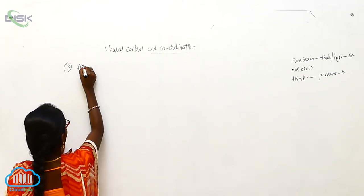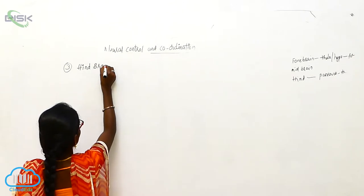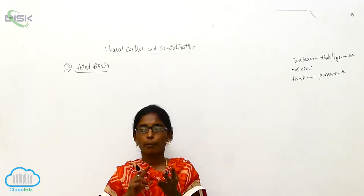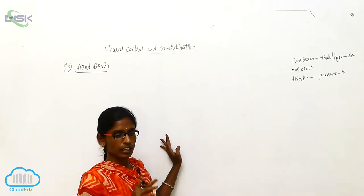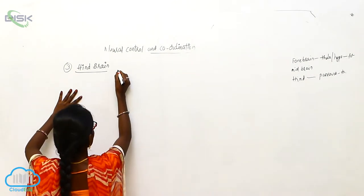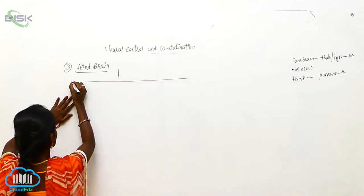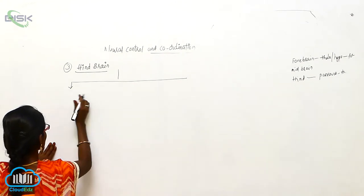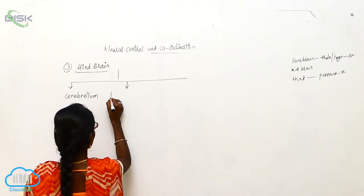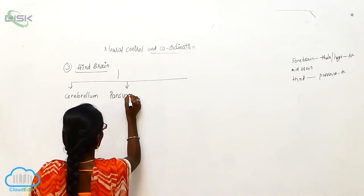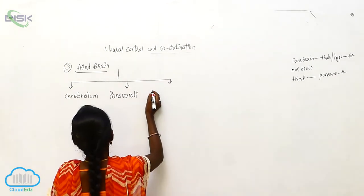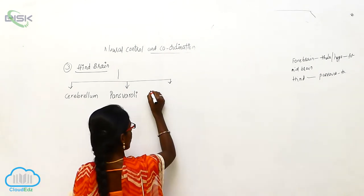The third one is the Hindbrain. The Hindbrain divides into three parts: the first is Cerebellum, the second is Pons Varoli, and the last one is Medulla Oblongata. Let us see about the Cerebellum.